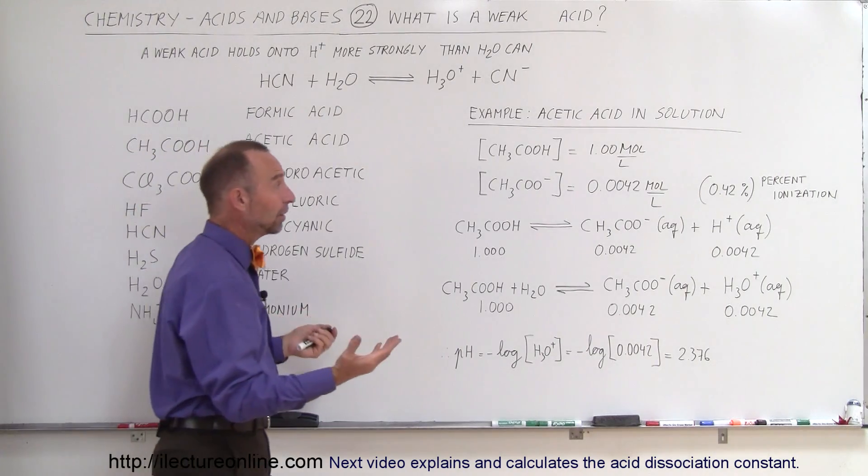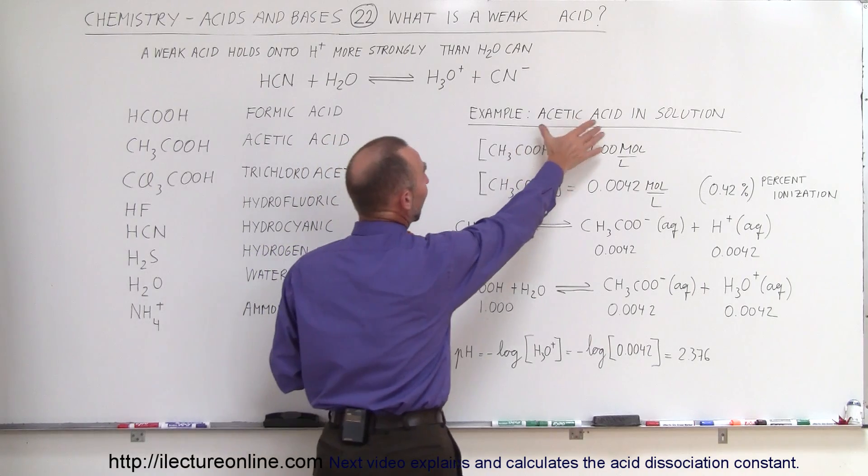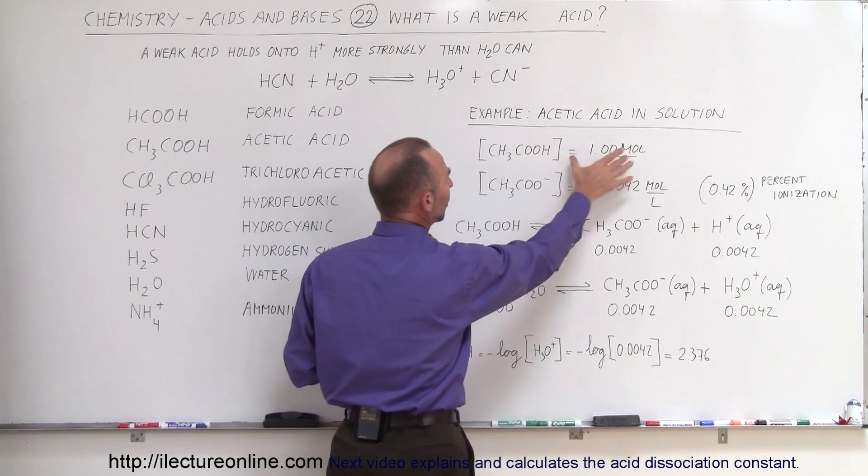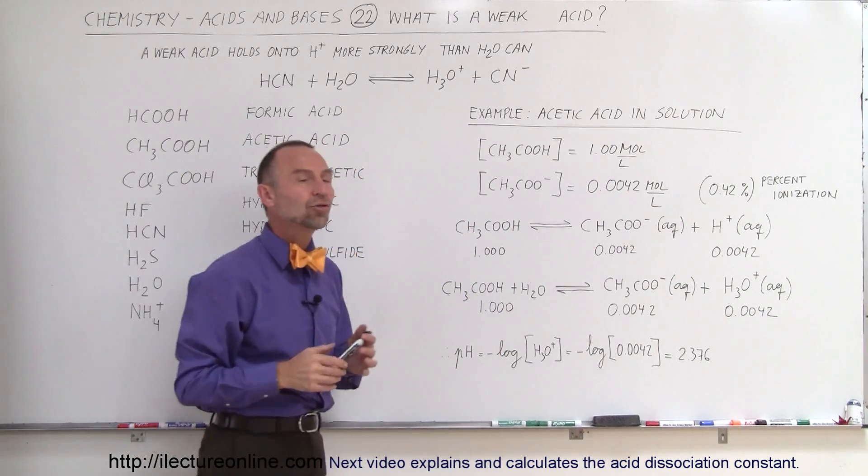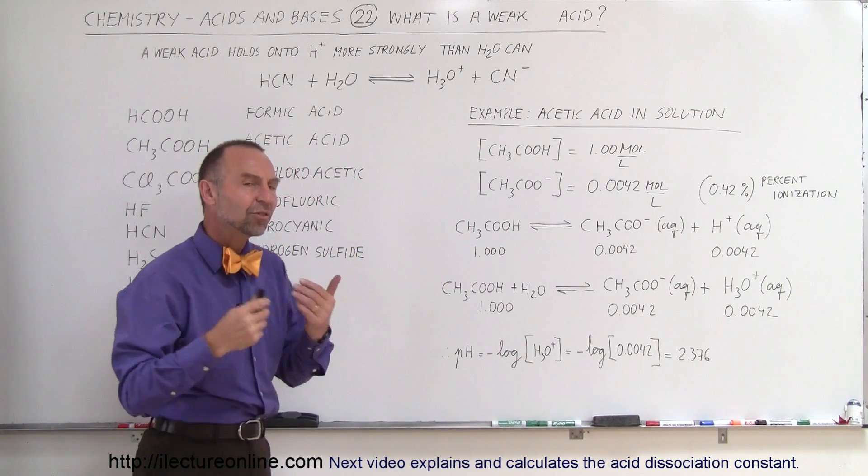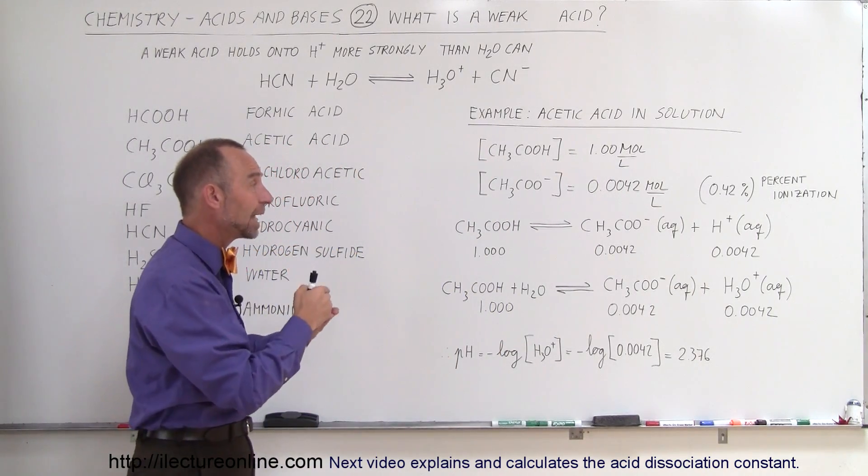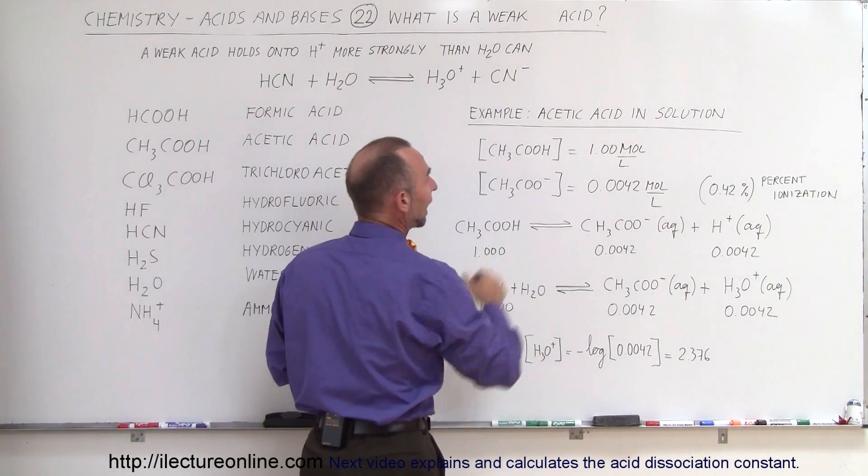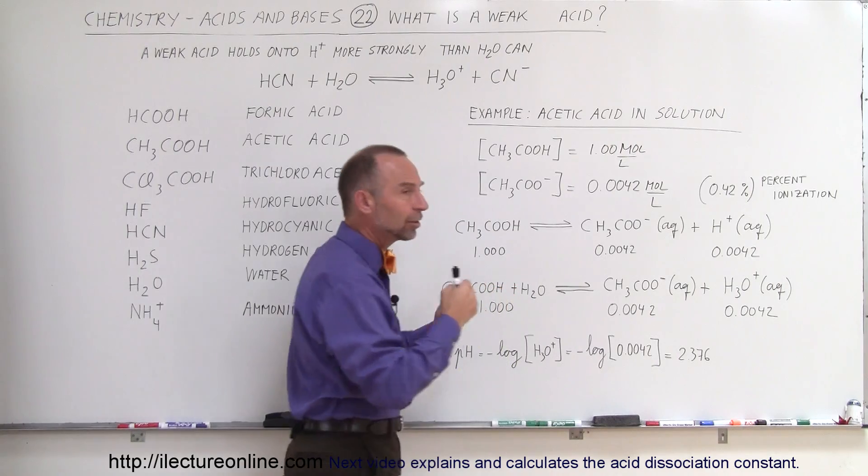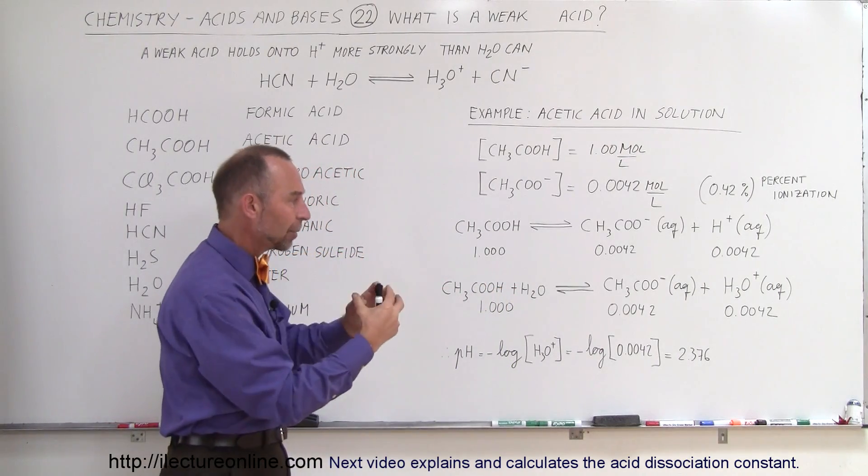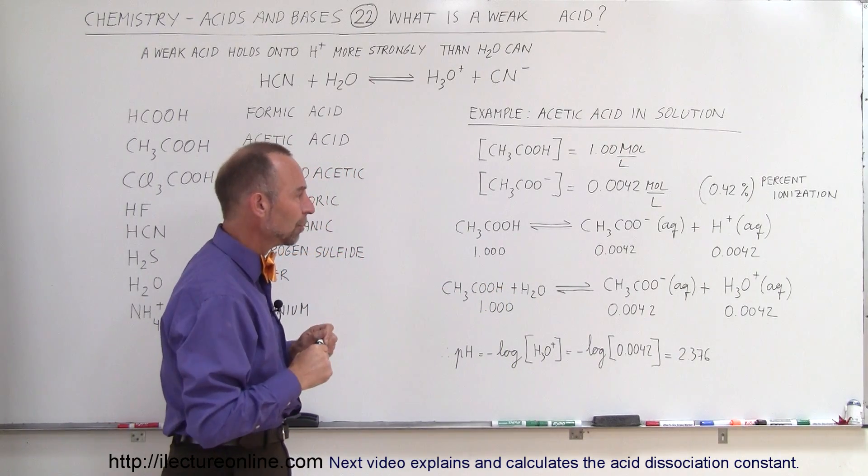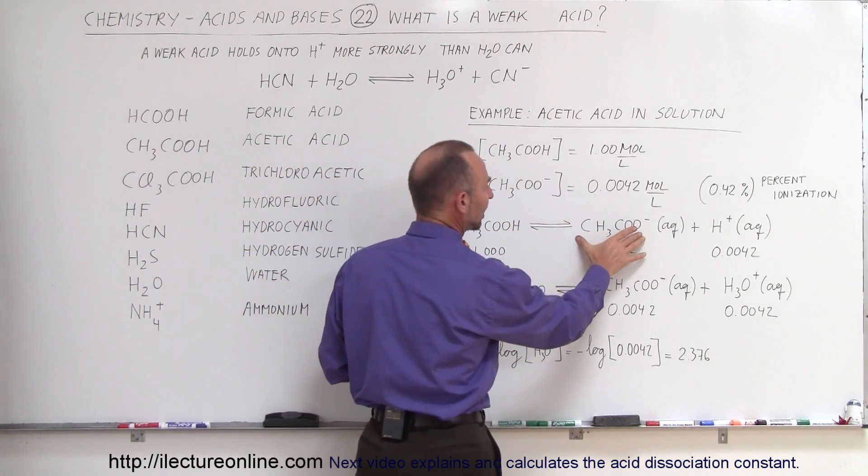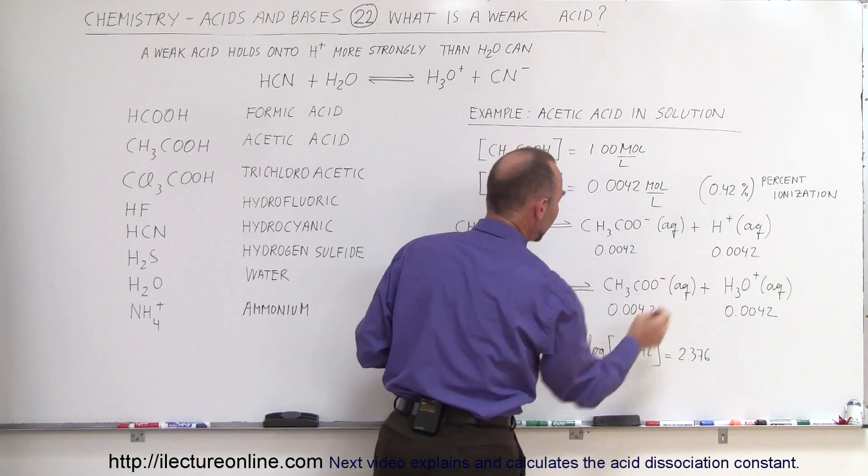So as an example, how does that work? Let's say we have acetic acid in solution, and notice that we start out with a 1 molar concentration of acetic acid. What percentage of that will actually dissociate into the acetic ion and hydrogen ion, so that the hydrogen ion can then combine with a water molecule into a hydronium ion? So this would be the simple equation: acetic acid turns into the acetic ion and hydrogen ion.